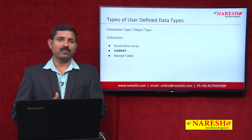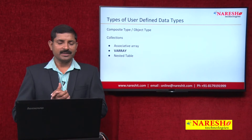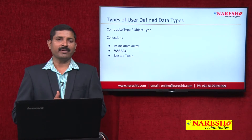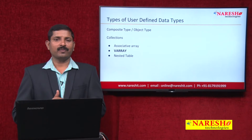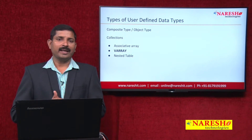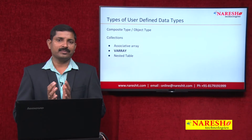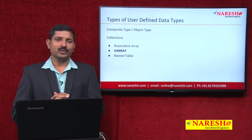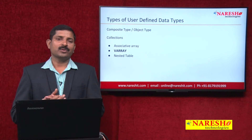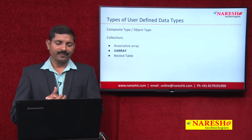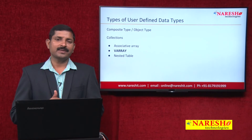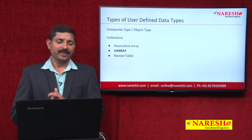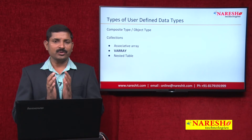V Array is basically used for multi-valued attributes, just like object type is used for composite attributes. When I say multi-valued attribute, one example would be phone number — an employee or a member in a table can have more than one phone number. In real time you might need only one phone number at a time, so phone number is a multi-valued attribute, and to store multiple phone numbers V Array is one of the best tools. V Array is a user-defined data type.